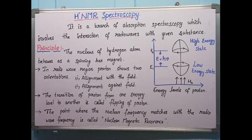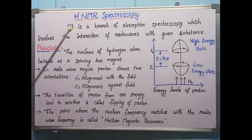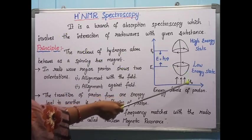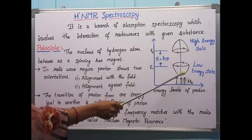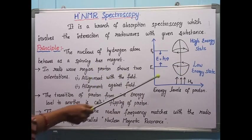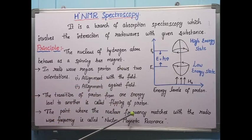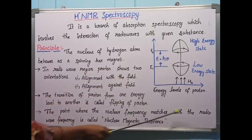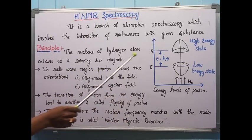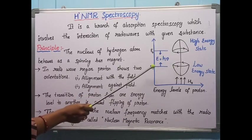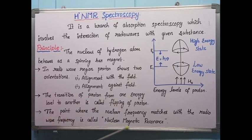In NMR spectroscopy, we keep the substance in the radio wave region and change the external magnetic field frequency, while the frequency of radio waves remains constant. At a certain point, the nuclear frequency of the proton matches the radio wave frequency. That point is called nuclear magnetic resonance, and it is the main principle behind NMR.